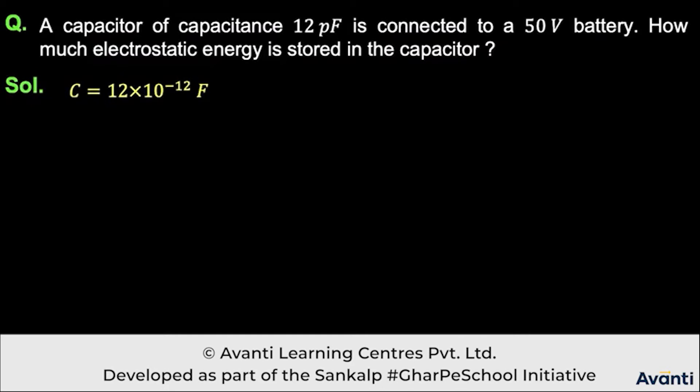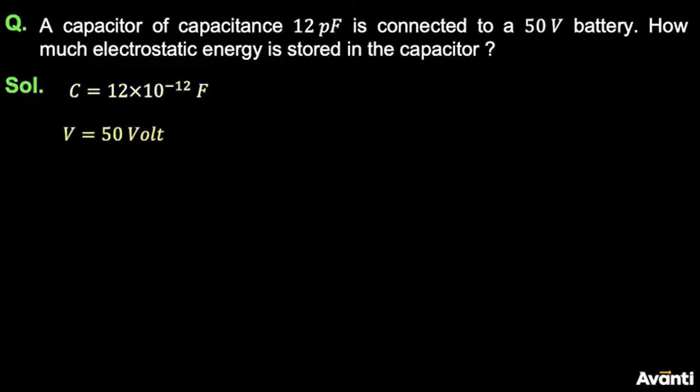So C is 12 picofarad, which is 12 × 10^-12 farad. V is 50 volt. We know that the energy is half CV squared. This means the energy is half times 12 × 10^-12, which is C, into 50 volt whole squared.